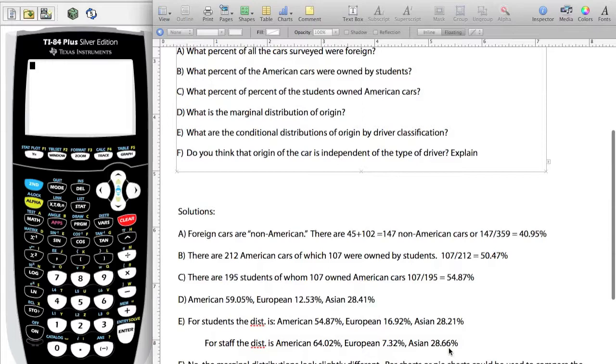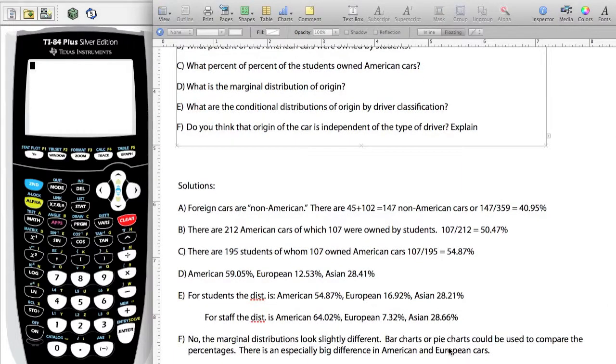The next question says, do you think the origin of car is independent of driver type? When we looked at this last time, we needed to look at the percentages. A lot of these questions are designed to lead you through the steps. We have marginal distributions, and if we wanted to isolate it based on type of driver, we have the different percentages broken down. The next question: are they independent? If they were, then all the percentages would be about the same. In this case, unfortunately, the percentages are quite different.